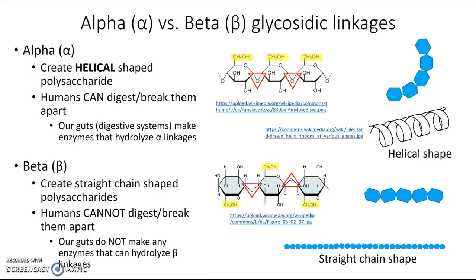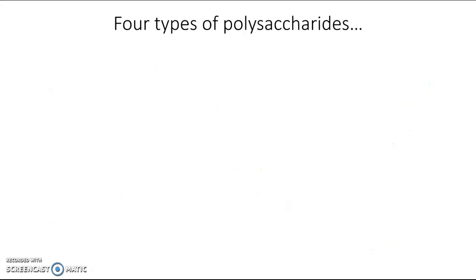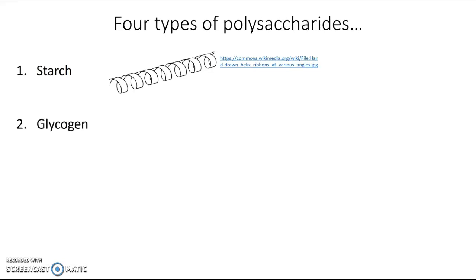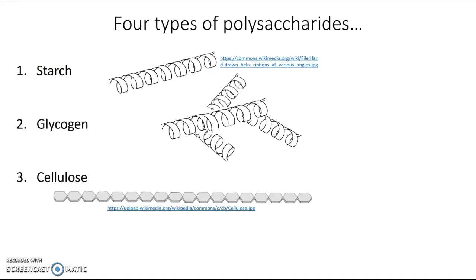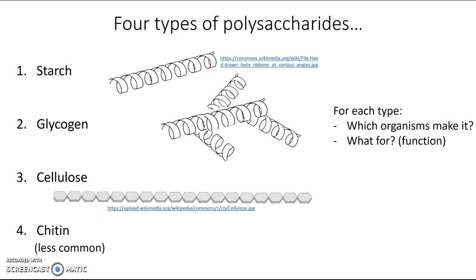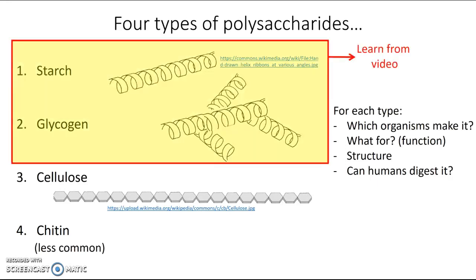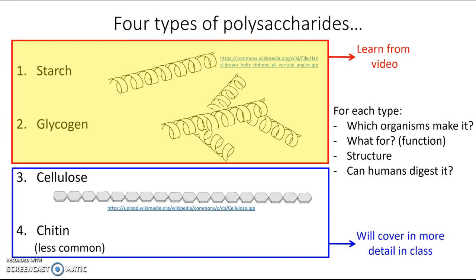So that's what you need to know about alpha and beta glycosidic linkages. Now we can take a closer look at the polymers that contain them. There are four types of polysaccharides you need to know for this class: starch, glycogen, cellulose, and chitin. For each, you'll need to know which organism makes it, what the function is, the general structure, and whether humans can digest it. This video will only cover starch and glycogen; cellulose and chitin will be covered later in class.